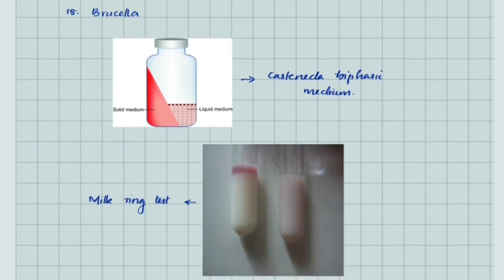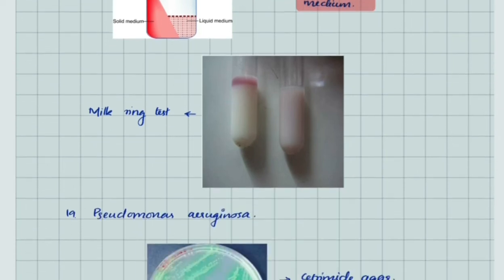For Brucella, the medium used is Castaneda biphasic medium—we have both solid and liquid medium in a single bottle. Milk ring test is positive—a pink ring is formed above the milk.